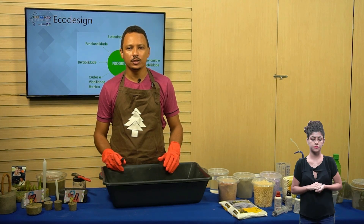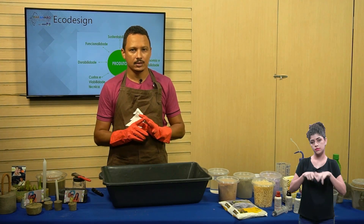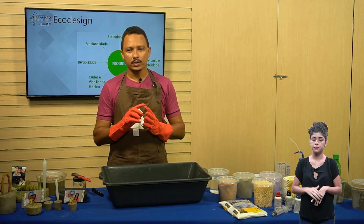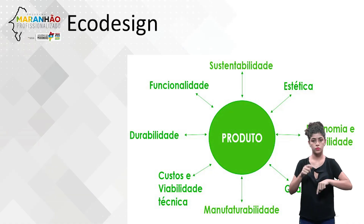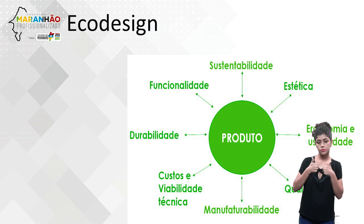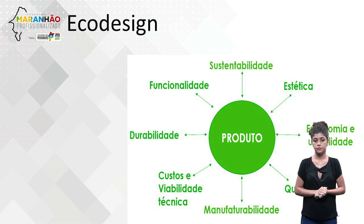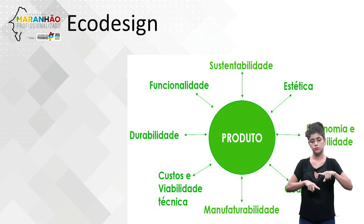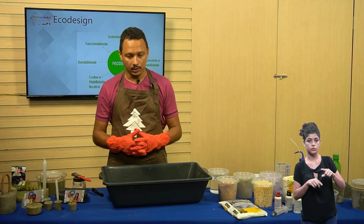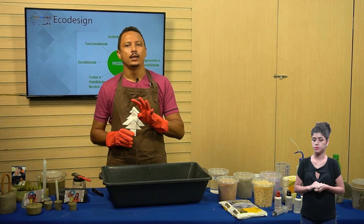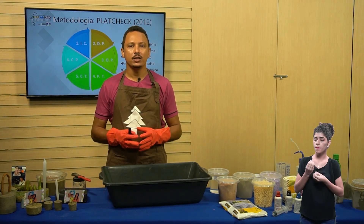Quando falamos sobre Eco Design, pensamos em quatro parâmetros: durabilidade, eficiência energética, materiais menos agressivos e reutilização. Mas ao desenvolver qualquer produto, também precisa pensar em estética, sustentabilidade, função, durabilidade, custo e viabilidade técnica, manufaturabilidade, qualidade e ergonomia/usabilidade. O Eco Design não é só aqueles quatro pontos iniciais — você não vai conseguir entregar algo ao cliente sem pensar em todos esses tópicos.